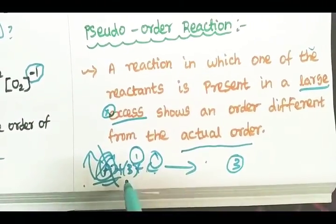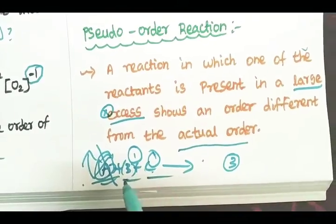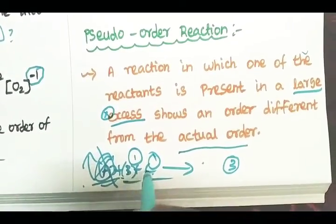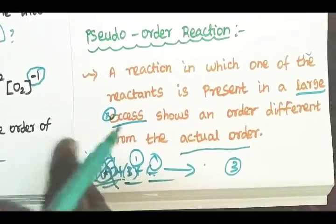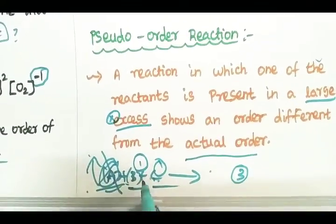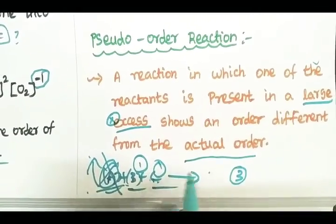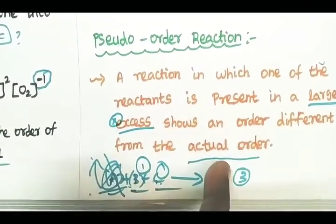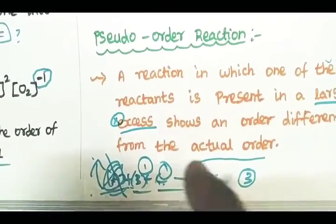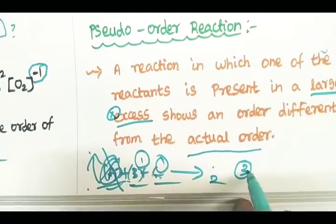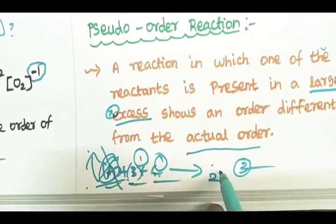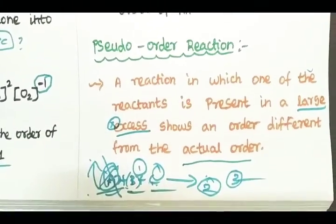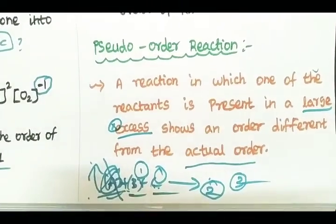The rate of the reaction is determined by the concentration of B and the concentration of C. For the reaction A + B + C, if A is in large excess, the rate is determined only by B and C. The order appears to be second order experimentally, but the actual order is third — this is a pseudo-order reaction, specifically pseudo-first-order or pseudo-second-order.